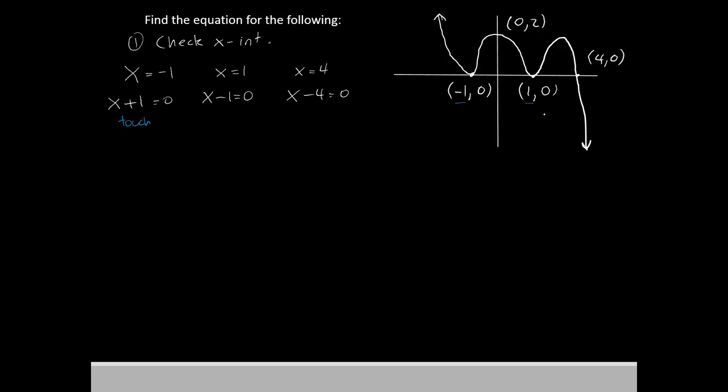And our second one at 1 also touches but does not cross. And then our 4 crosses straight through. All right?